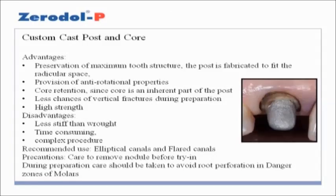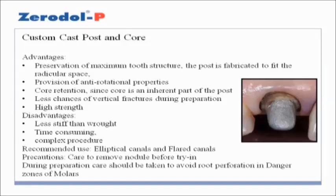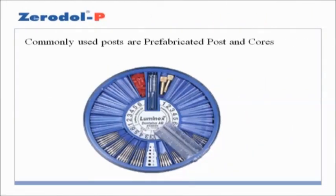Custom cast post and core. Advantages: preservation of maximum tooth structure, the post is fabricated to fit the radicular space, provision of anti-rotational properties, core retention since core is an inherent part of the post, less chance of vertical fractures during preparation, high strength. Disadvantages: less stiff than cast metal, time-consuming complex procedure. Recommended use: elliptical canals and flared canals. Precautions: care should be taken to remove nodules before try-in. During preparation, care should be taken to avoid root perforation in danger zones of molars. Commonly used posts are prefabricated posts.